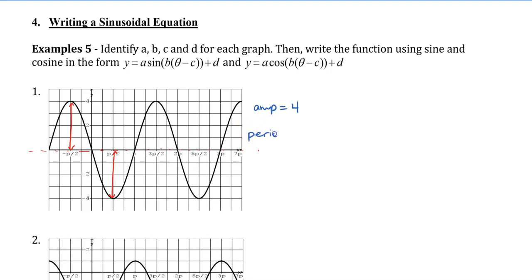Next, we're going to take a look at the period. To define the period, what I want you to do is take one point from the graph and go to the next point where we complete one cycle. In this case, we have to go all the way until 2π before it repeats again — from 0 to 2π — so the period is 2π. However, that is not what our B value will be. Since period equals 2π divided by B, the B value equals 2π divided by the period, which is also 2π, so our B value is 1.